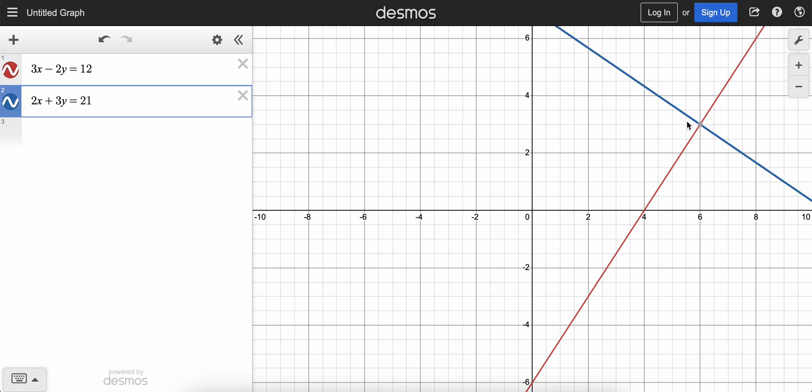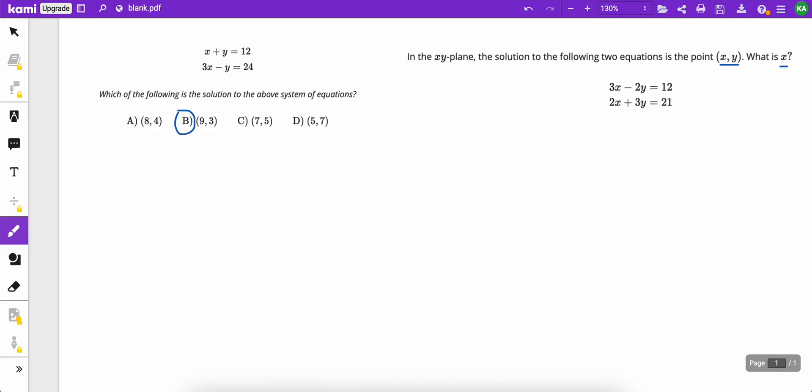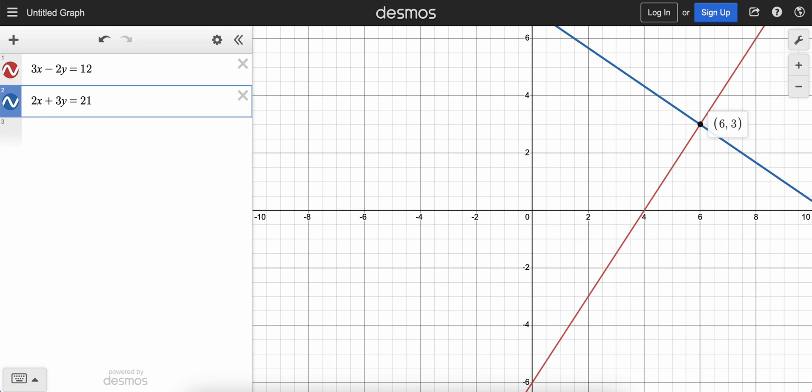And there we go. The intersection point is 6, 3. Remember, they want the x value. And so the answer would be the x value there, which is 6.